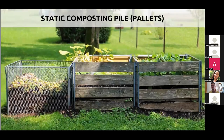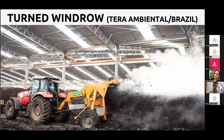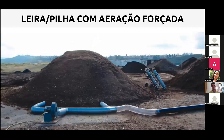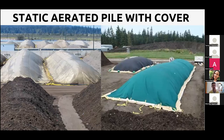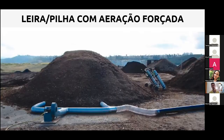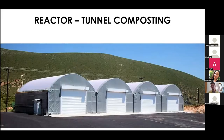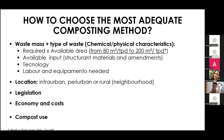We have static composting piles, sometimes adapted for community composting using pallets. We have turned windrow systems where mechanical turners operate. We have forced aeration with blowers to push oxygen inside the pile. There are also static aerated piles with covers so there's no exposed environment and gas exchange is controlled. And at the far end of complexity, reactors.